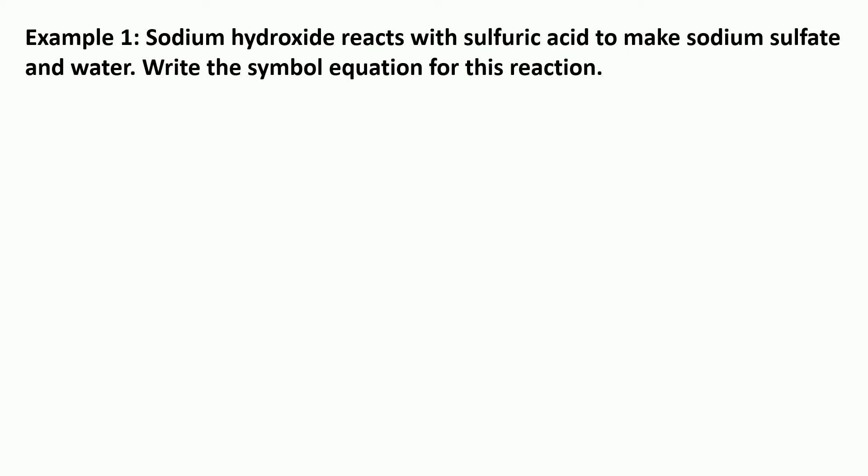The first example says sodium hydroxide reacts with sulfuric acid to make sodium sulfate and water. Write the symbol equation for this reaction. Now even though the question doesn't ask for the word equation, step one is to write the word equation because this helps you get the right things on the right side of the arrow.